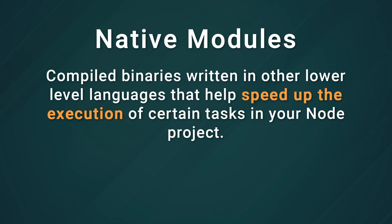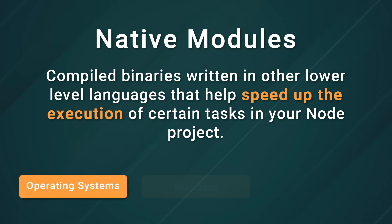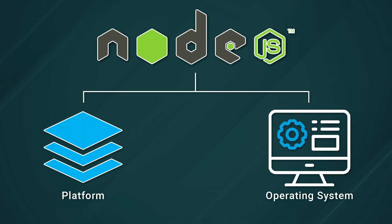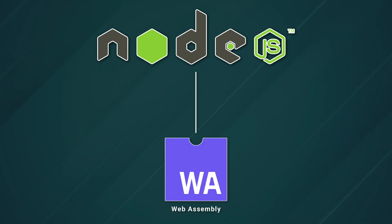If you're a Node developer, chances are high that you've had to deal with native Node modules at some point. Native modules are compiled binaries written in other, lower-level languages that help speed up the execution of certain tasks in your Node project. They're super powerful, super useful, and they can be used to do things like hooking into the host machine's operating system, performing serious number crunching, or big data operations. But this comes with its own challenges, not the least of which is portability. Native code must be compiled for whatever platform and operating system environment that Node itself is running on. So that's where we're going to be looking at utilizing WebAssembly in Node.js and how it can be an awesome tool to speed along development and streamline your Node project for your business.